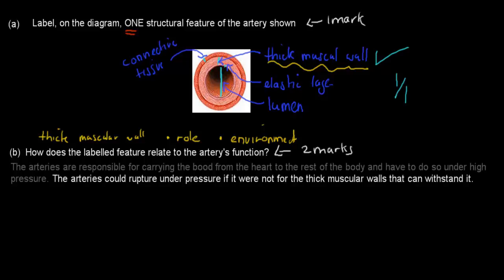And what I just wrote is the arteries are responsible for carrying blood from the heart to the rest of the body. So that was one of its main functions. It has to be able to carry blood from the heart to the rest of the body, and it has to do so under high pressure. That was the important part. So that was the role, to carry blood from the heart to the rest of the body. And the environment or situation for the arteries was that it was under high pressure at many times.